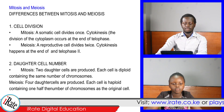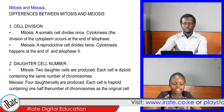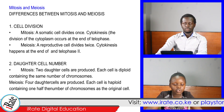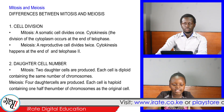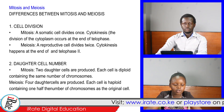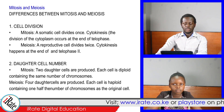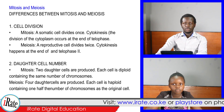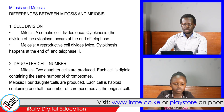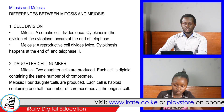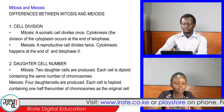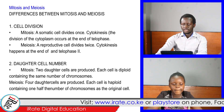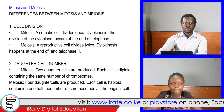Point 2: Daughter cell number. In mitosis, two daughter cells are produced; each cell is diploid, containing the same number of chromosomes as the original. In meiosis, four daughter cells are produced; each cell is haploid, containing one half of the number of chromosomes as the original cell.